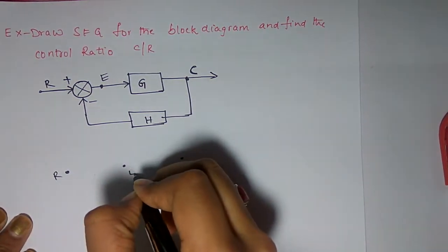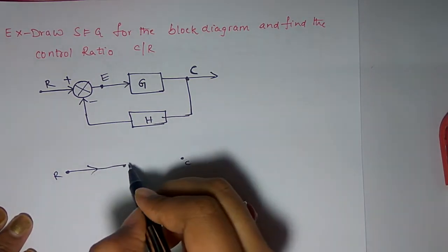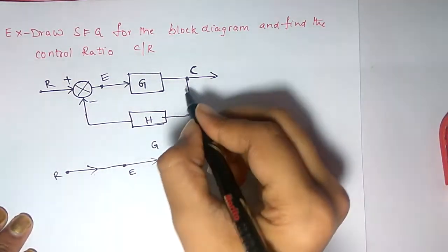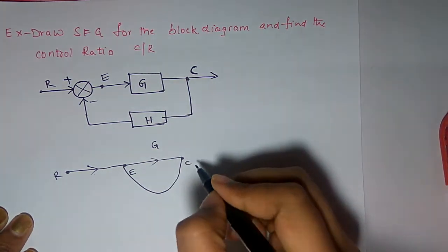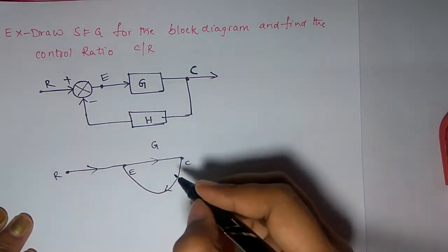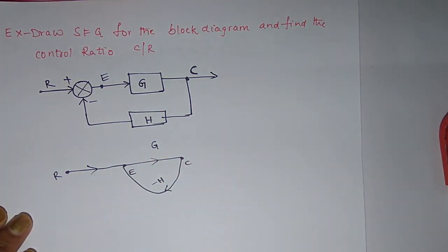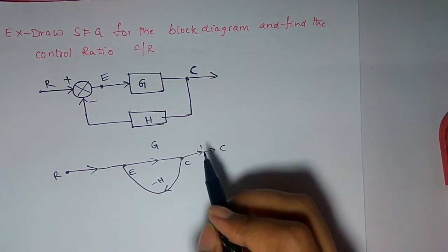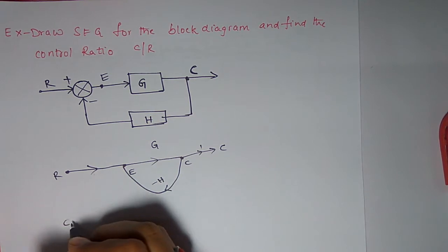So R, E, and C are the nodes. R and E are interconnected by a branch with gain 1, and E and C are interconnected with a branch with gain G. As it is negative feedback, you write it as minus H. So now, to find the transfer function, C by R is output by input.